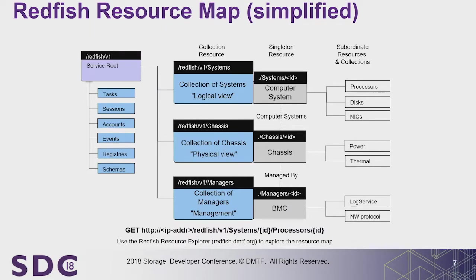This is the Redfish resource map. Off the root there are services like tasks, sessions, and accounts — things everyone needs. Then there's Systems, Chassis, and Managers, separating the management ecosystem from the computer system. The system view is the logical data-plane view, chassis is the physical sheet-metal view, and managers is the management-plane view. For switches, fabrics, or power and facilities, you just add another collection off the root. Composition service is also there but not shown in this simplified view.